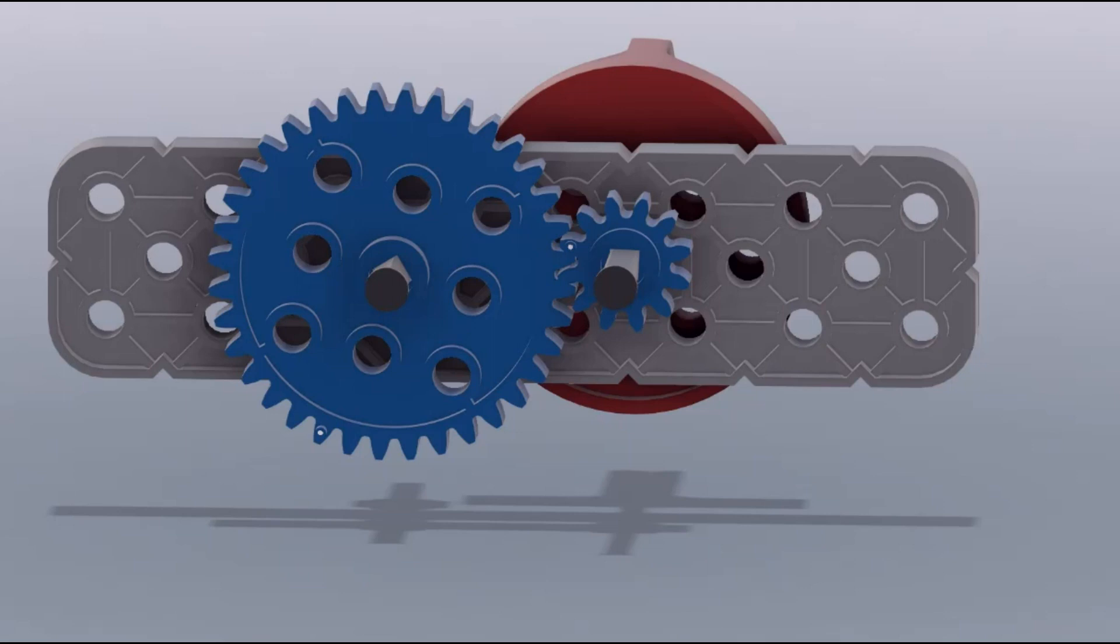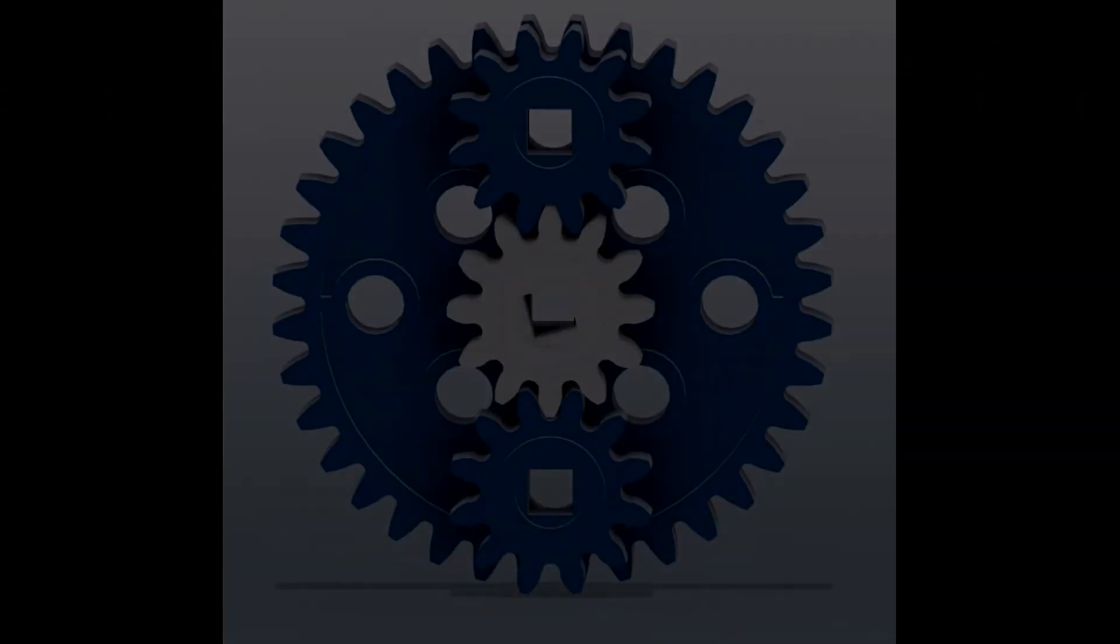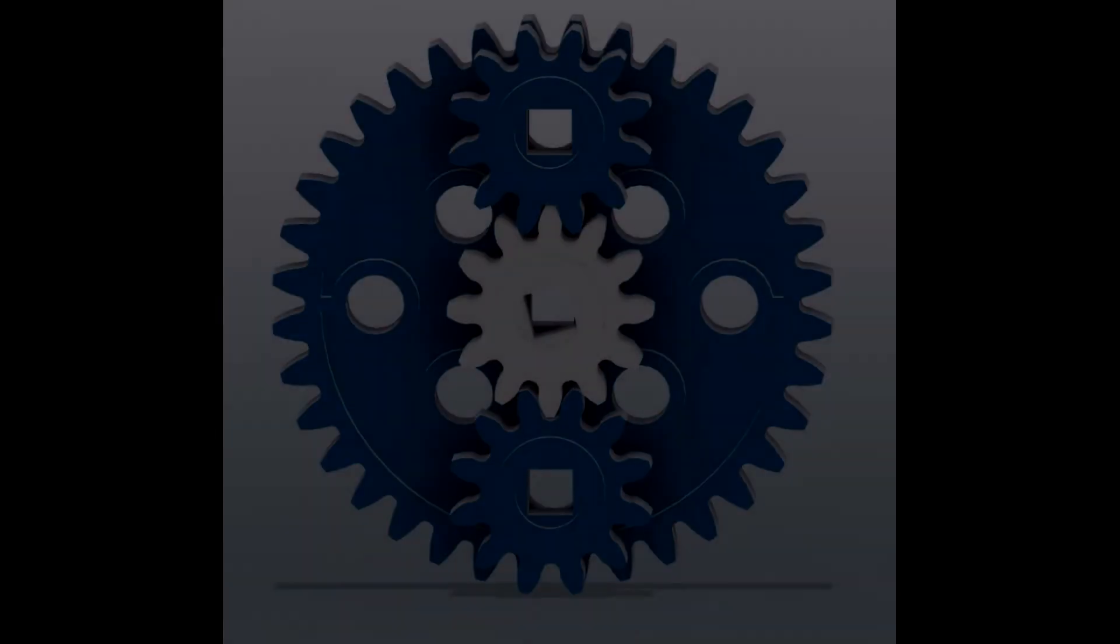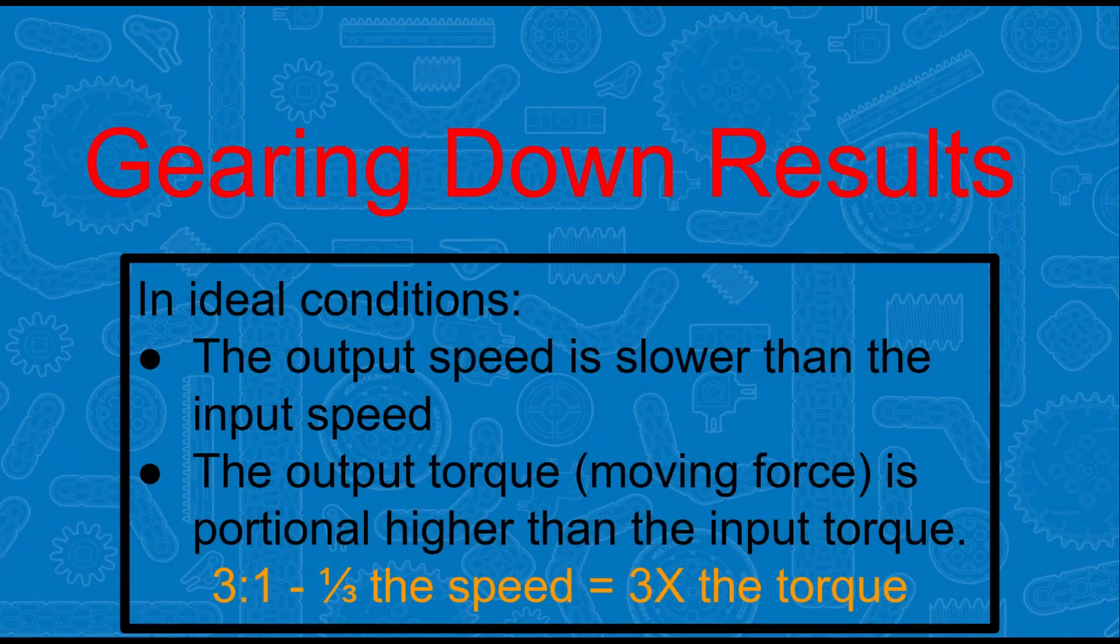Meaning, with this system, the output speed will only be one third the input speed. However, since the input gear is only one third the size of the output gear, the output of this system will have three times the torque. In summary, when gearing down, the output speed is slower than the input speed, but the output torque is proportionally higher than the input torque. For our example of a 3 to 1 gear ratio, the output of the gear system has one third the speed, but it has three times the torque.